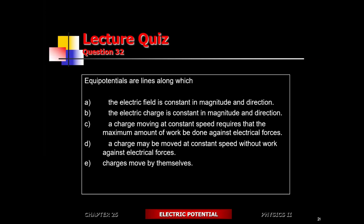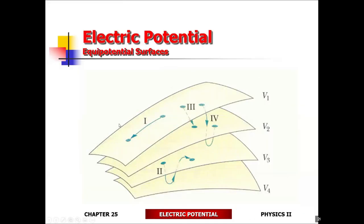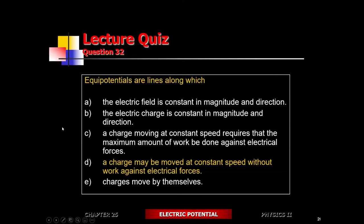Electric charge is constant in magnitude — did you say D as in dog? Make an argument. In an electric potential line, I'm going to assume that potential energy is the same throughout. Along these lines, the charges are free to move without getting energy. Along the equipotential lines, the charges can move — the electric field is not going to do any work on them. So there's no reason for these charges to speed up, slow down, or change direction — they're not going to get energy. So D is the best answer: a charge may move at constant speed without work being done against the electric field, because the electric field has no component along the equipotential.